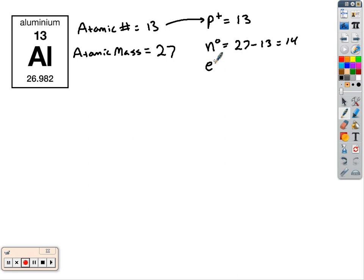And the electrons will be the same as the protons. These are all neutral atoms at this point. So there are thirteen electrons in this atom.